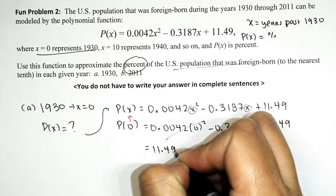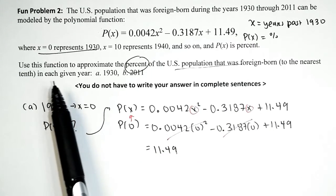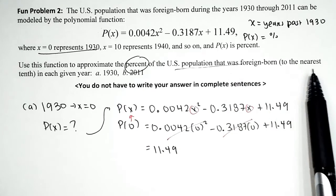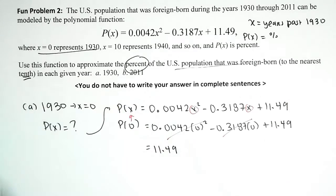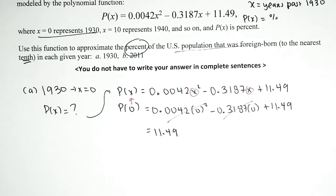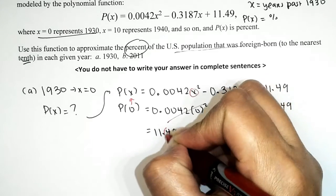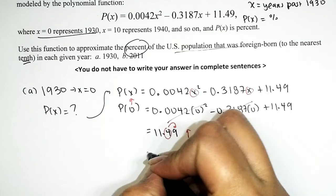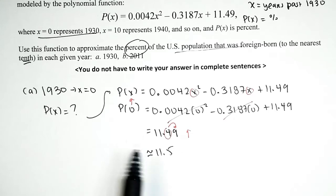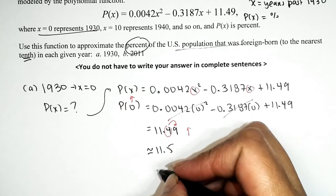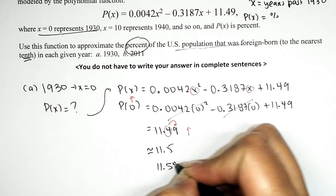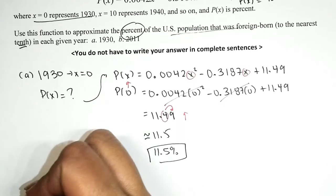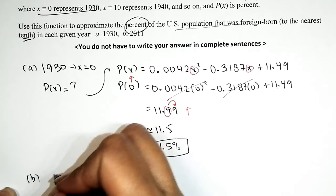The problem says approximate to the nearest tenth, so we need to round 11.49. The digit in the tenths place is 4 — we look right next door and it looks like we round up — so that gives us about 11.5. Since P of X represents percent, we submit 11.5 percent for part a.